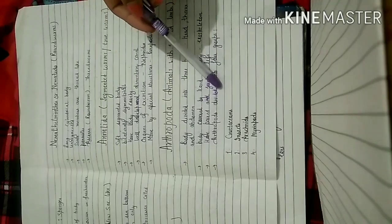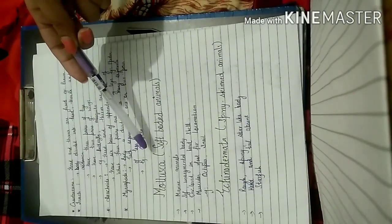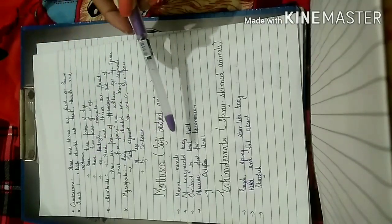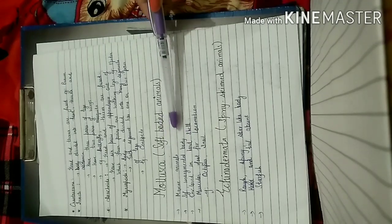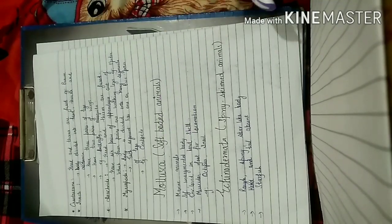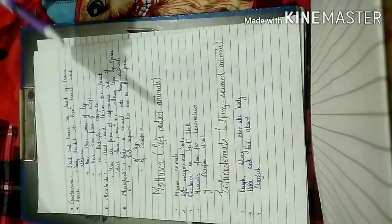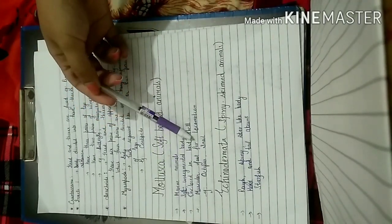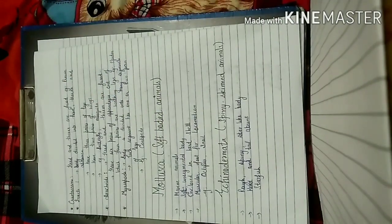These are the further groups of Arthropoda. Now let us study another phylum, that is Mollusca. These animals are soft-bodied, they are marine animals, and they have an unsegmented body. They are enclosed in a hard shell and a muscular foot is present for locomotion — they move with the help of the muscular foot.